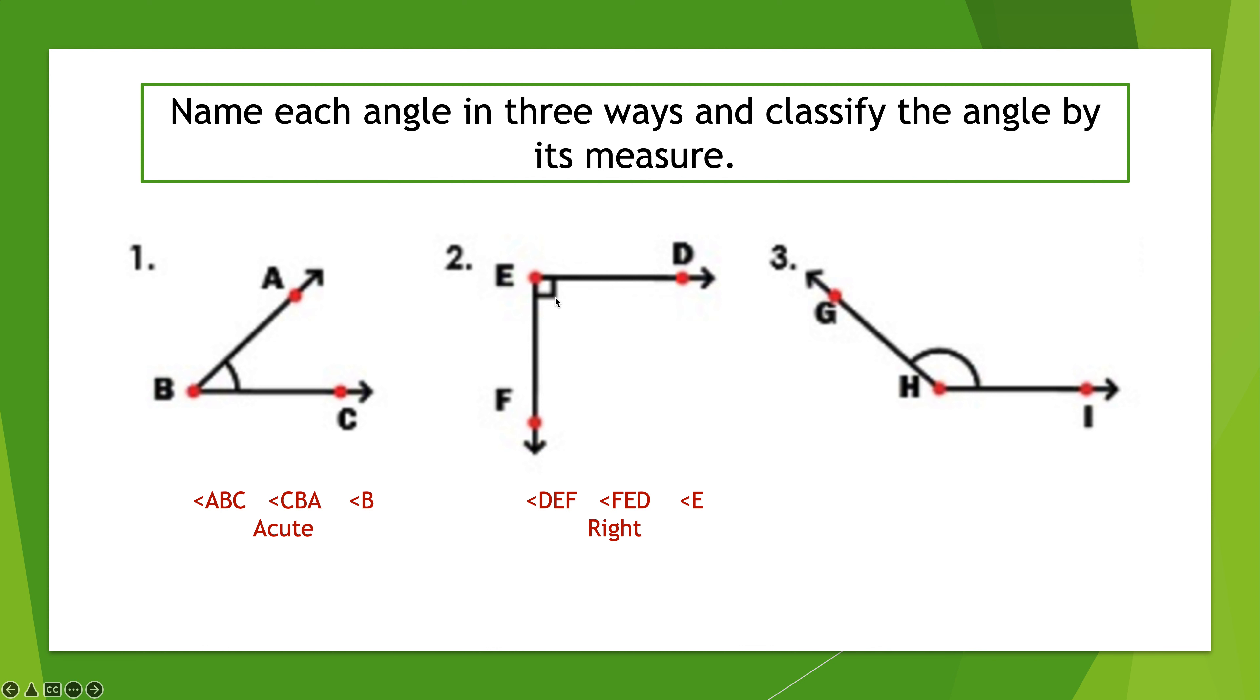And it is most definitely a right angle. That's what that little box in the corner means there. That means it's a right angle or a 90 degree angle. Whenever you see that box it means the lines are perpendicular, and perpendicular lines form right angles. Number three: angle GHI left to right top down, angle IHG right to left bottom up, or angle H, and it is an obtuse angle.